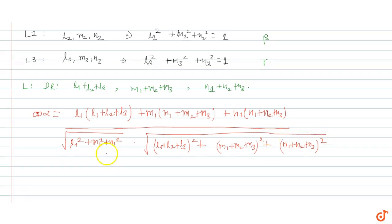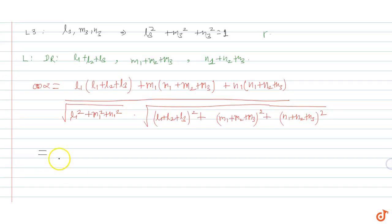If we open this expression, expanding the numerator we get: L1 square plus L1·L2 plus L1·L3 and similarly the M and N terms, along with cross terms like L1·L2 plus M1·M2 etc.